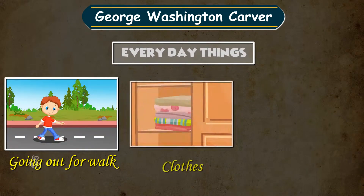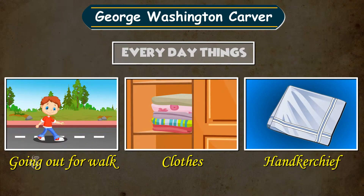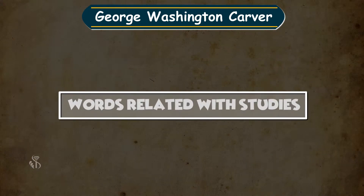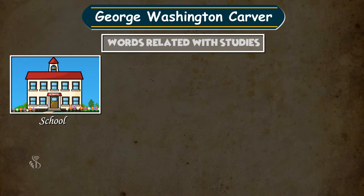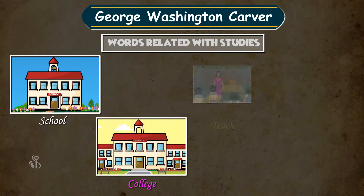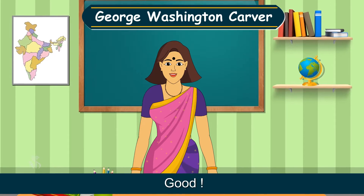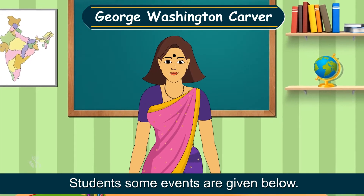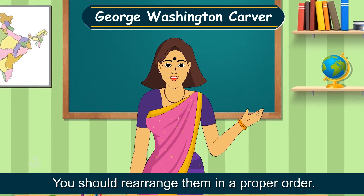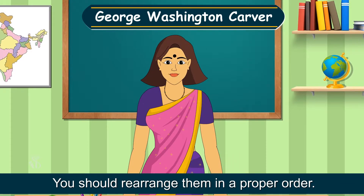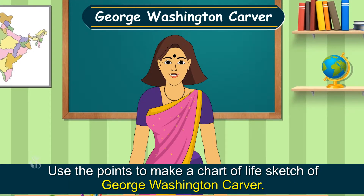For walk: clothes, handkerchief. Words related with studies: school, college, teach, laboratory. Good students. Now some events are given below — you should rearrange them in a proper order and use the points to make a chart of the life sketch of George Washington Carver.